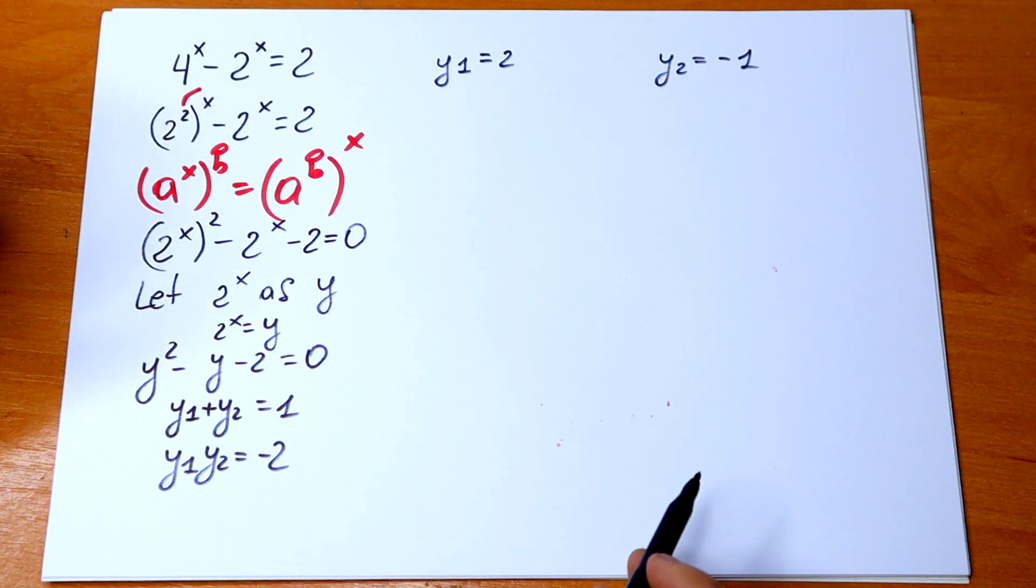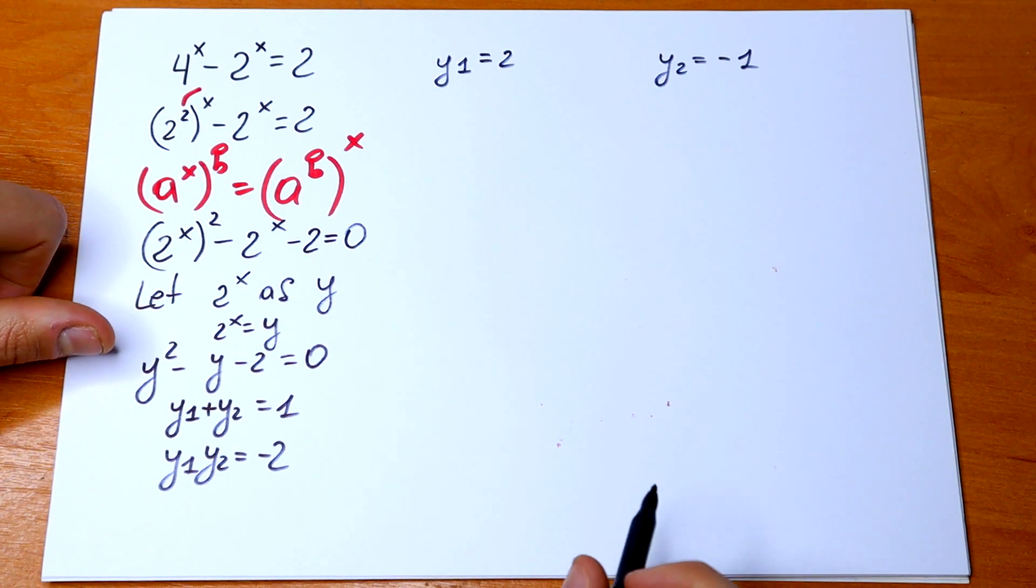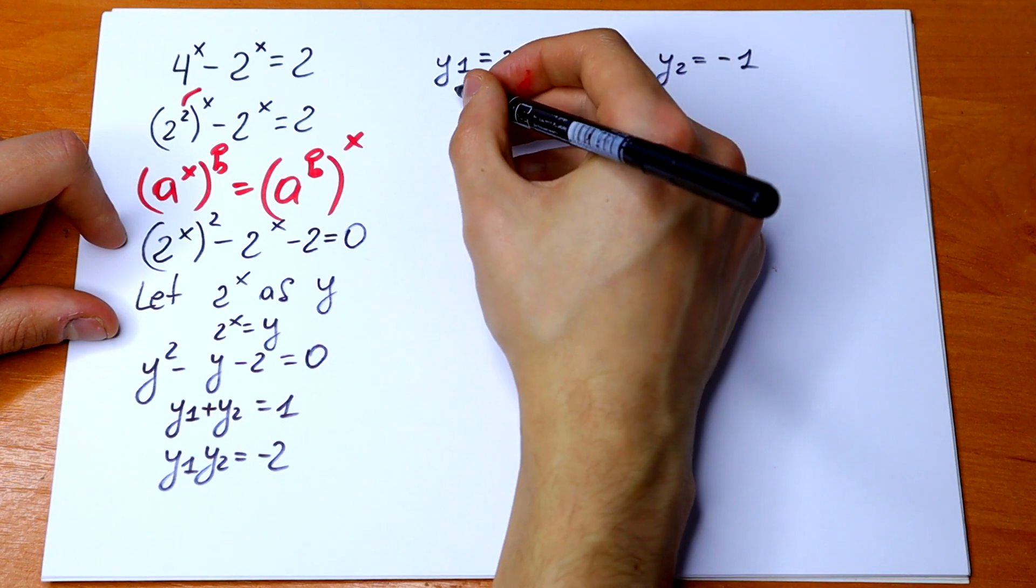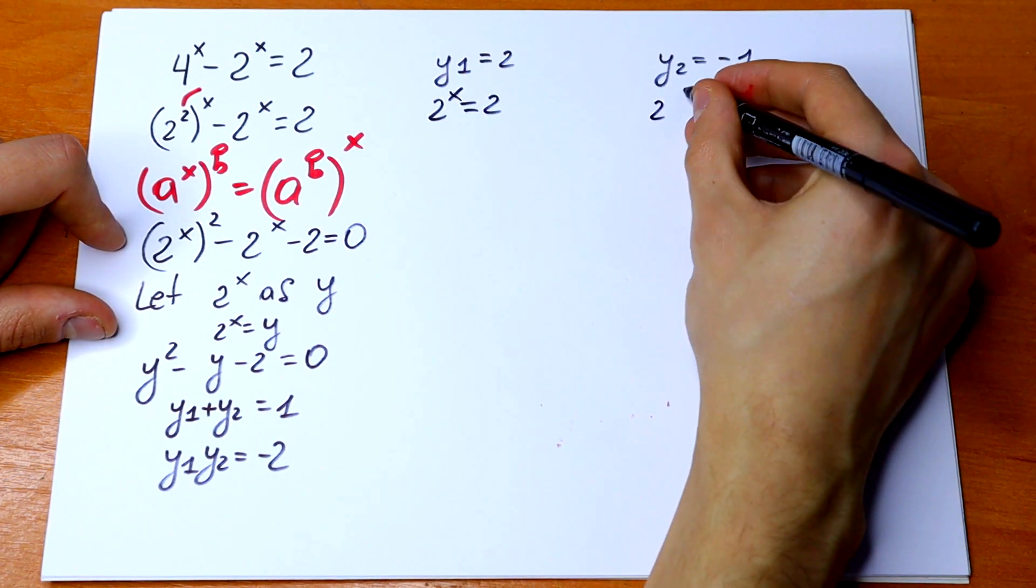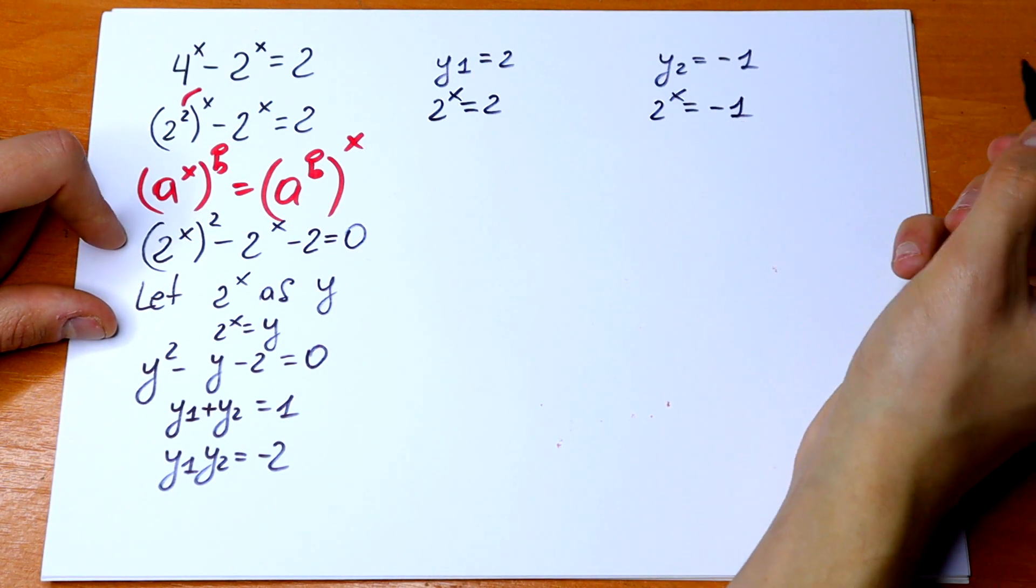We will have two equations. Let's start with the first one: 2^x = 2 and 2^x = -1.